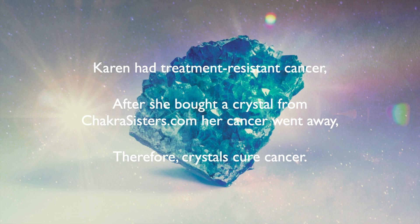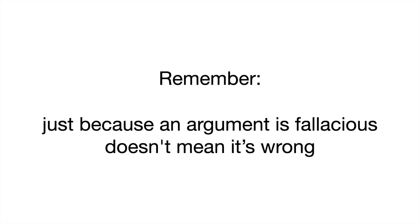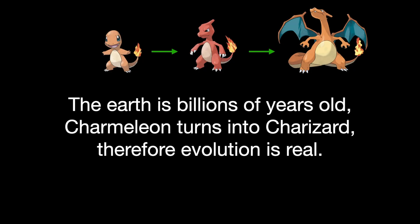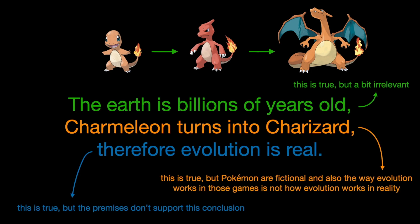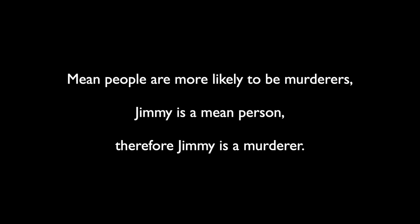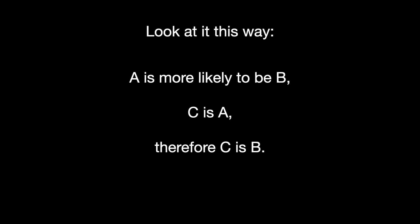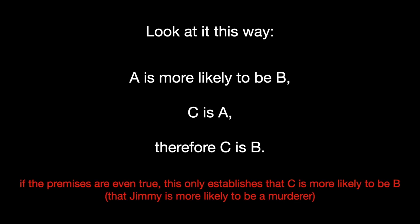The annoying thing about fallacious arguments is that they can still be persuasive even when they're wrong. People unknowingly — or even knowingly — commit logical fallacies all the time, and that doesn't stop them from believing what they believe, or even convincing others to believe the same thing. It's also important to remember that just because an argument is fallacious doesn't mean it's wrong. I could make a fallacious argument with a true conclusion — it's just that the truth of the conclusion shouldn't be believed on the basis of that argument. For instance: mean people are more likely to be murderers; Jimmy is a mean person; therefore, Jimmy is a murderer. Jimmy might even be a murderer, but the argument doesn't establish that all mean people are murderers, so I can't conclude he is one just because he's mean.